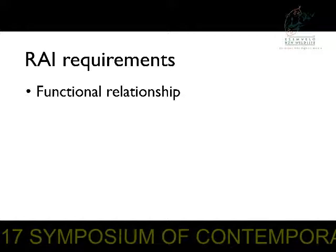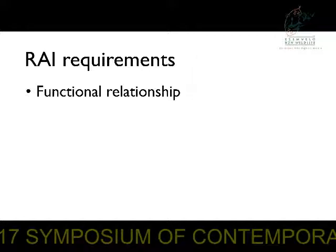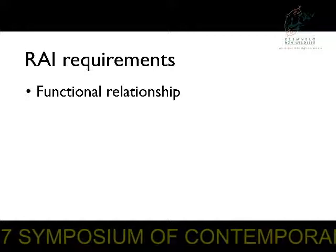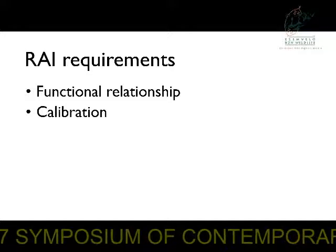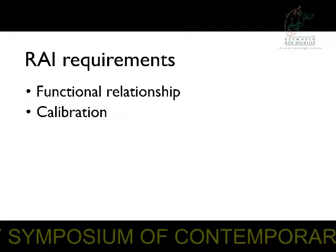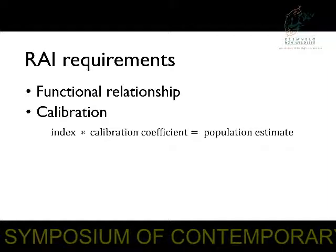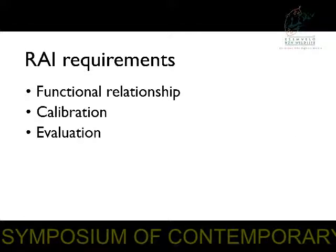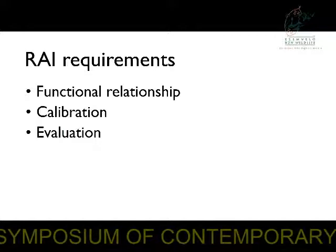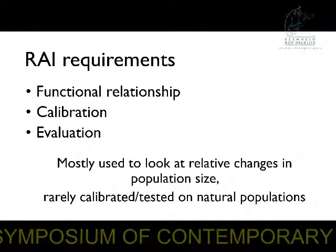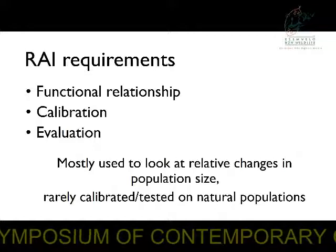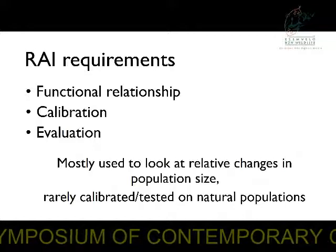Calibration first requires that you have some knowledge of the functional relationship between the index and the abundance — whether that relationship is linear or nonlinear. You're then going to want to take some of your historic survey data, from ground transects or point counts, and use that to calibrate your index, producing a calibration coefficient which you can use in subsequent abundance estimates. It's also worth evaluating the precision of this coefficient periodically over both space and time to see whether inference still holds. This is a bit of a contentious estimator, and it's rarely calibrated or tested in natural populations, most particularly in populations of large herbivores.